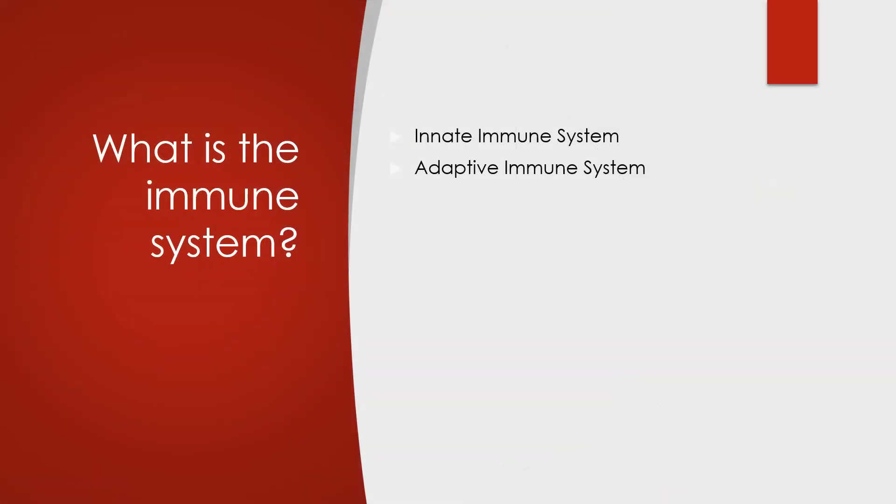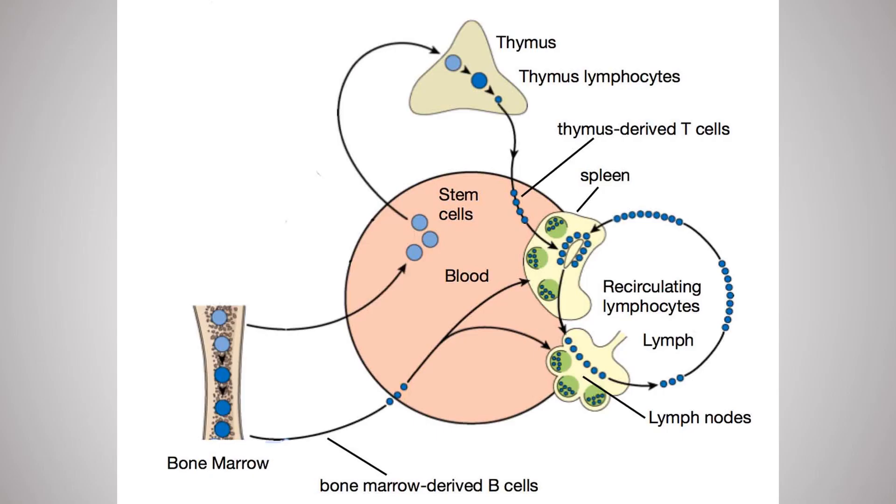Next, we will take a look at the adaptive immune system. The immune cells that are part of the adaptive immune system are called lymphocytes. The two main types of lymphocytes are T cells and B cells. Both cells are produced in bone marrow, but T cells are matured in the thymus, while B cells are matured in bone marrow.